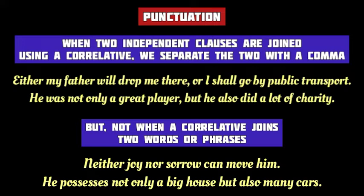However, when a Correlative Conjunction is used to join two words or phrases in a sentence, a comma is not used. In the first example, 'neither/nor' joins two nouns — 'joy' and 'sorrow.' And in the second example, 'not only/but also' joins two phrases — 'a big house' and 'many cars.' So, no comma has been used in these sentences.